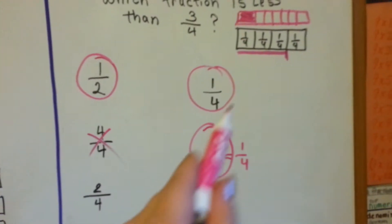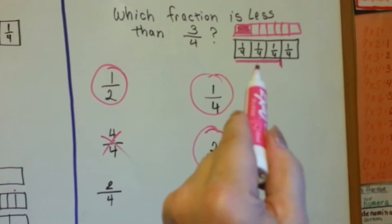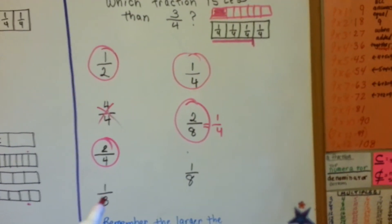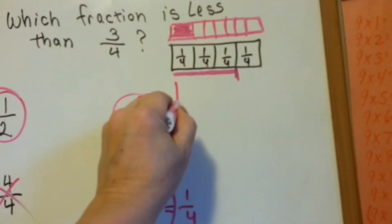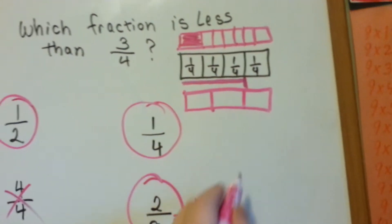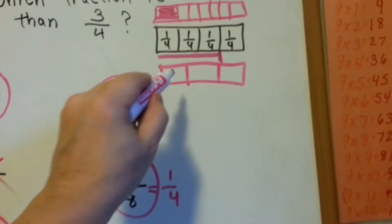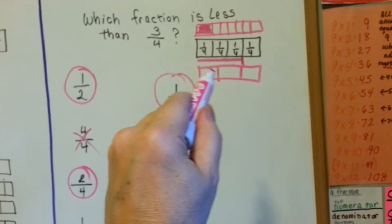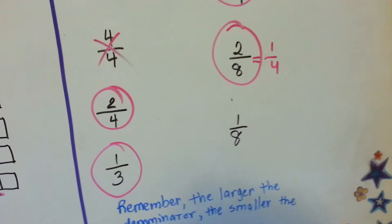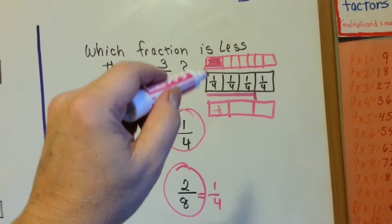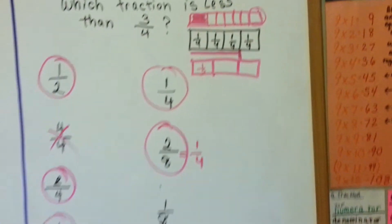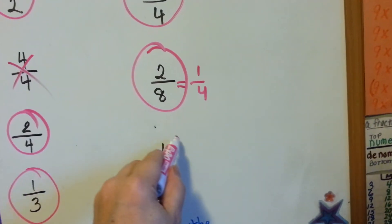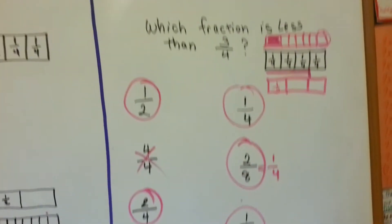How about two-fourths? Is two-fourths smaller than three-fourths? One-two — that brings you right here. Yes, that's smaller. How about one-third? Let's make a box and break it up into thirds. Each one of these is a third. Is one-third smaller than three-fourths? Yes, it is. How about one-eighth? This little piece right here would be an eighth. Is one-eighth smaller than three-fourths? Yes, it sure is. So these fractions are all less than three-fourths.